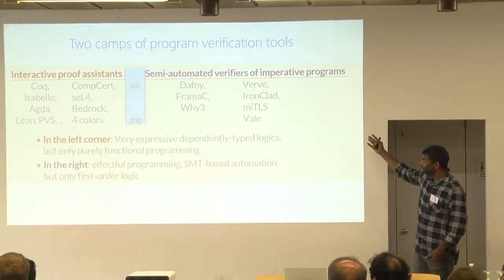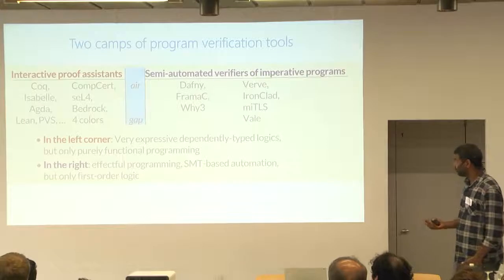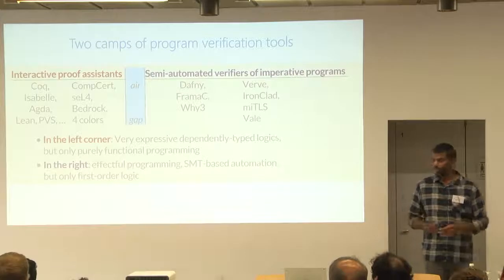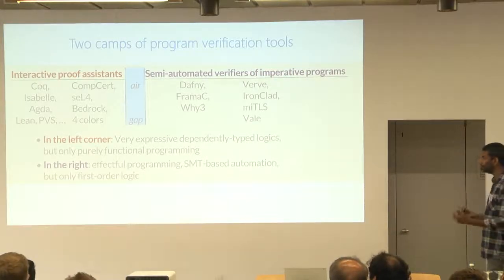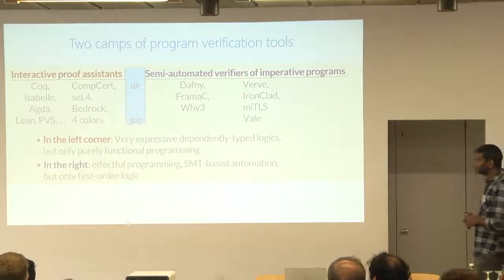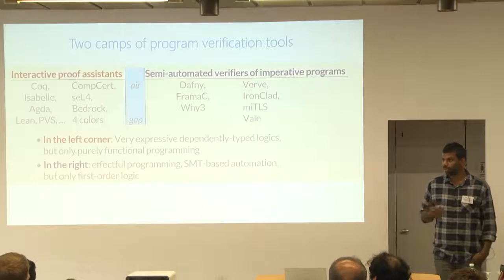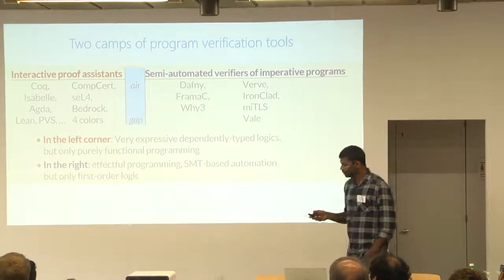On the other side, you have verification tools, backed by SMT solvers to give you automation, that are based on richer programming languages. So they have effects and sometimes concurrency and so on. But their specification languages tend to be somewhat more impoverished as compared to, say, Coq. You typically work in first-order logic extension in some theories. In the middle is this gap that F-star is trying to fill.